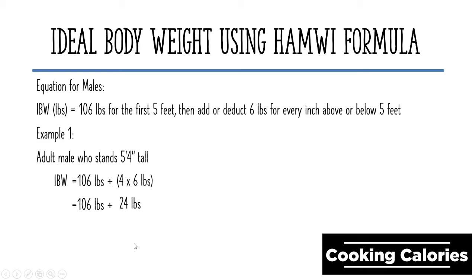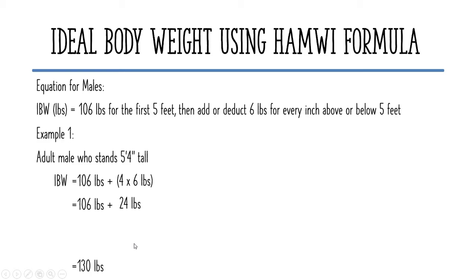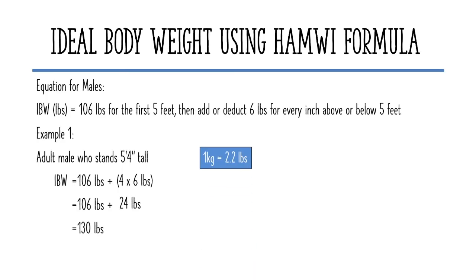106 plus 24 equals 130 pounds. To convert the weight to kilograms, divide the pounds by 2.2. So, 130 divided by 2.2 equals 59 kilograms.